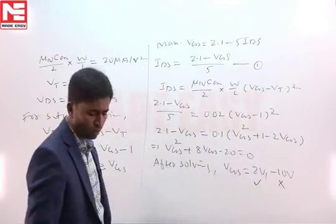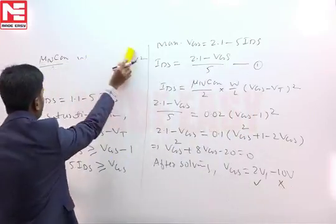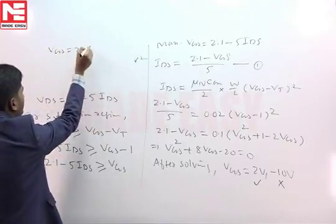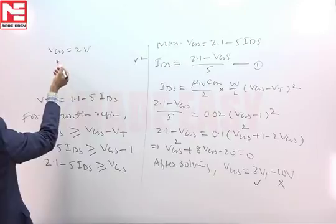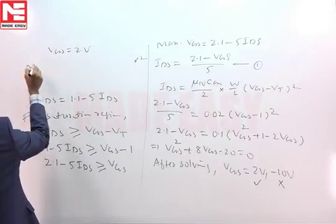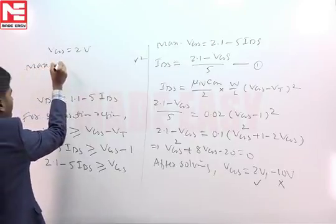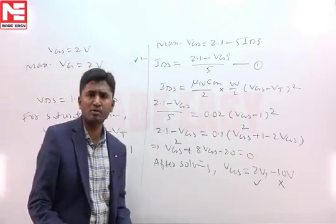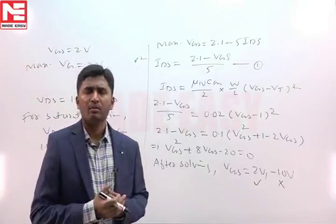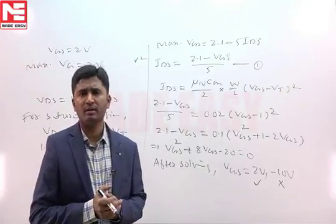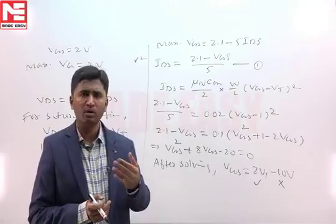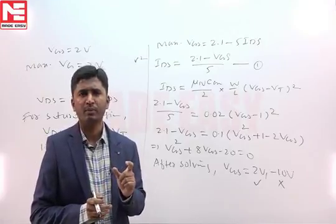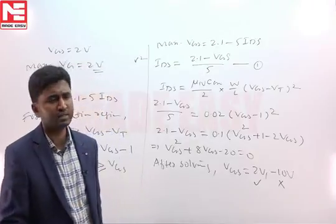And in this way, we come to know that maximum VGS is equal to 2 volt, VGS equal to 2 volt and from the circuit you may say VGS and gate voltage both are same. So, answer for this question will be maximum VG 2 volt. Gate voltage can be at most equal to 2 volt, then MOSFET will remain in saturation. If you make gate voltage more than 2 volt, MOSFET may go into triode region. So, for this question, the maximum VG for which MOSFET can operate in saturation is 2 volt.